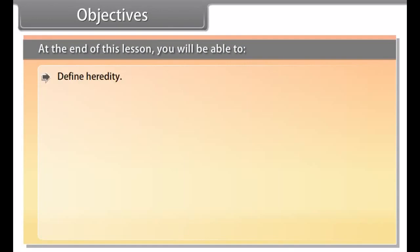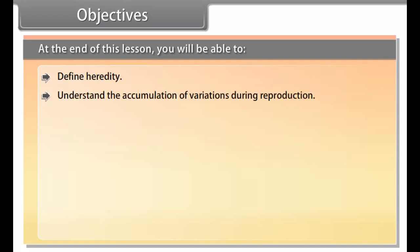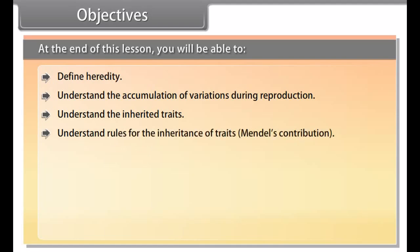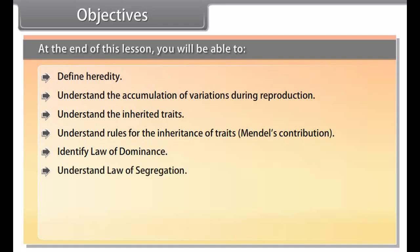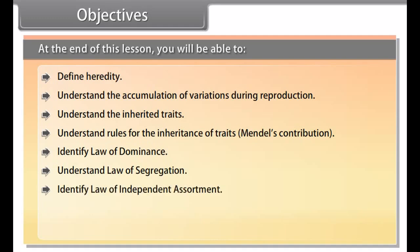Objectives: at the end of this lesson you'll be able to define heredity, understand the accumulation of variations during reproduction, understand the inherited traits, understand rules for the inheritance of traits, Mendel's contribution, identify law of dominance, understand law of segregation, identify law of independent assortment, understand how these traits get expressed, and understand the process of sex determination.